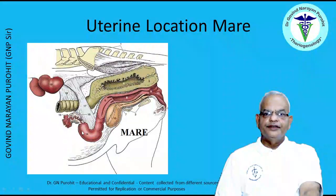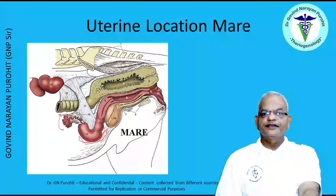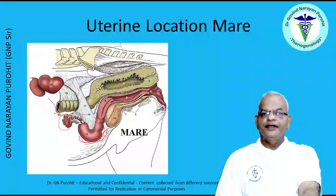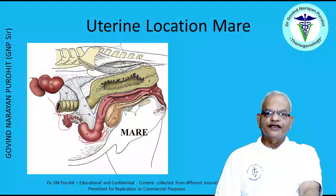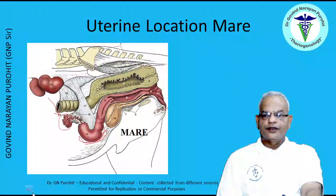In the mare, the uterine horns may be located on the pelvic floor but sometimes they hang just ahead of the pelvic brim. The ovaries are located near the iliac crest and just behind the kidneys. Transrectal palpation of the mare uterus is difficult because the mare does not have much uterine tonicity except during early gestation, when the mare will show uterine tone.